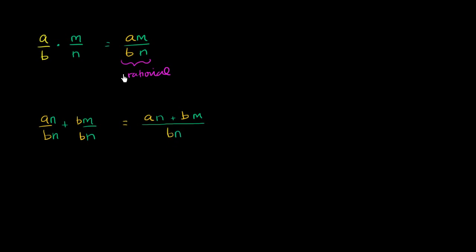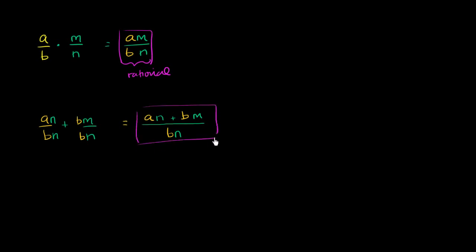So b times n — we've just already talked about — this is definitely going to be an integer right over here. And then what do we have up here? We have a times n, which is an integer, and b times m is another integer. The sum of two integers is going to be an integer, so you have an integer over an integer — you have the ratio of two integers. So the sum of two rational numbers is going to give you another rational number. So you take the product of two rational numbers, you get a rational number. You take the sum of two rational numbers, you get a rational number.